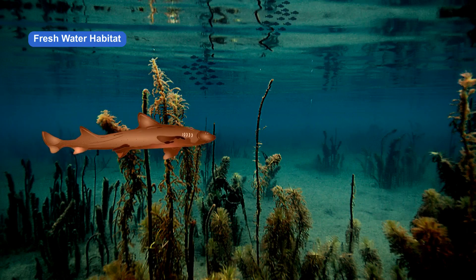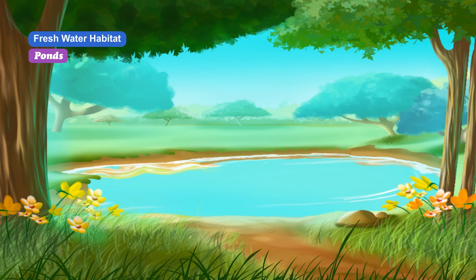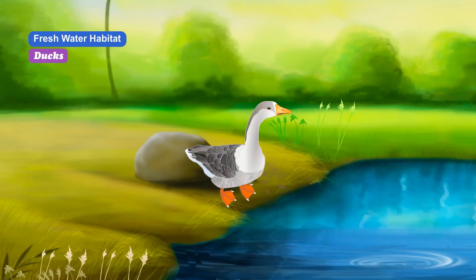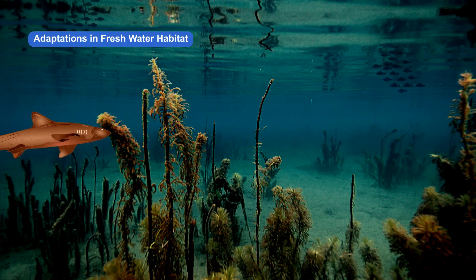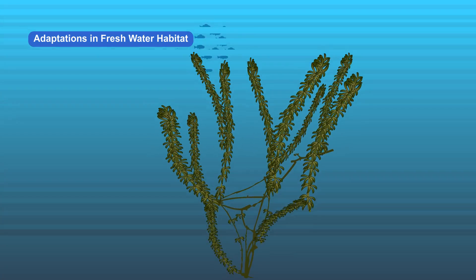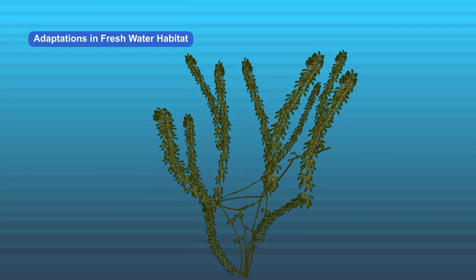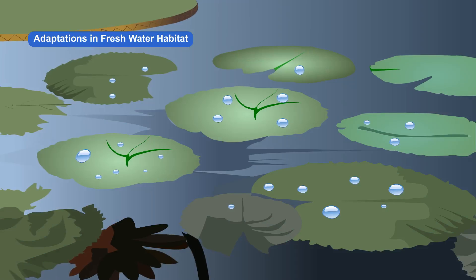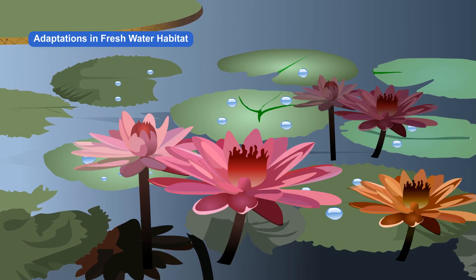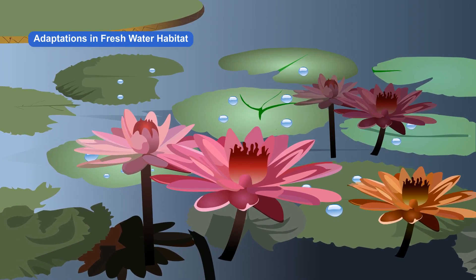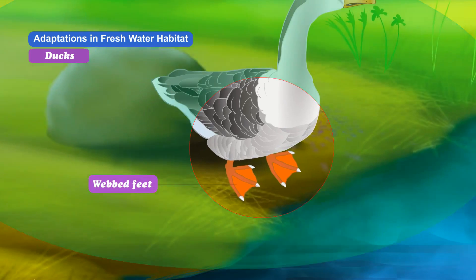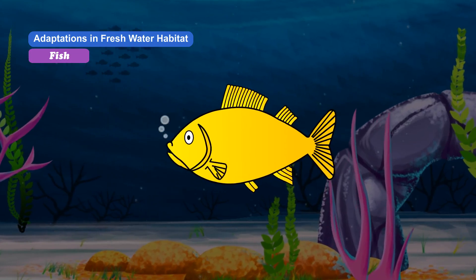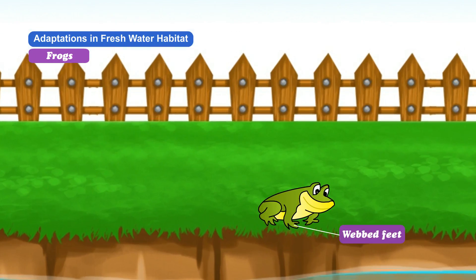Freshwater habitat includes rivers, ponds and lakes. Animals like fish, frogs and ducks, and plants like lotus and water lily are found in freshwater. Plants that live in water have long stems that are hollow and light. Roots are reduced in size and hold the plant in place. Leaves have a wax coating that prevents them from rotting. Leaves and flowers float on water. In plants that are totally submerged, leaves are thin and ribbon-like. Animals like ducks have webbed feet with which they can swim easily. Fish have gills with which they respire. Frogs can live both in water and on land and also have webbed feet.